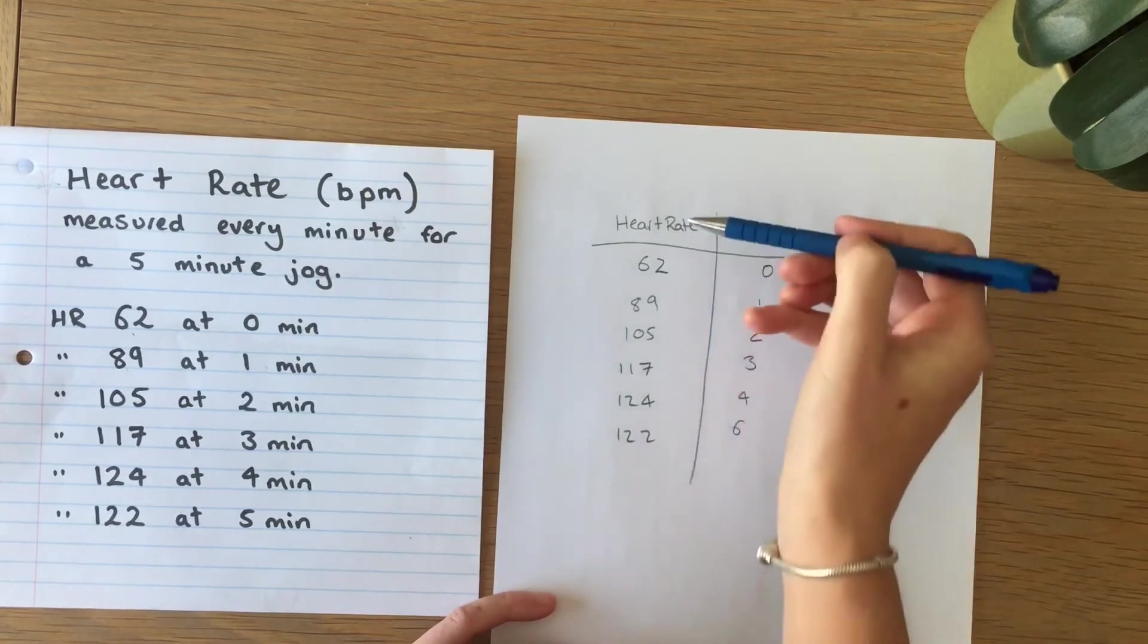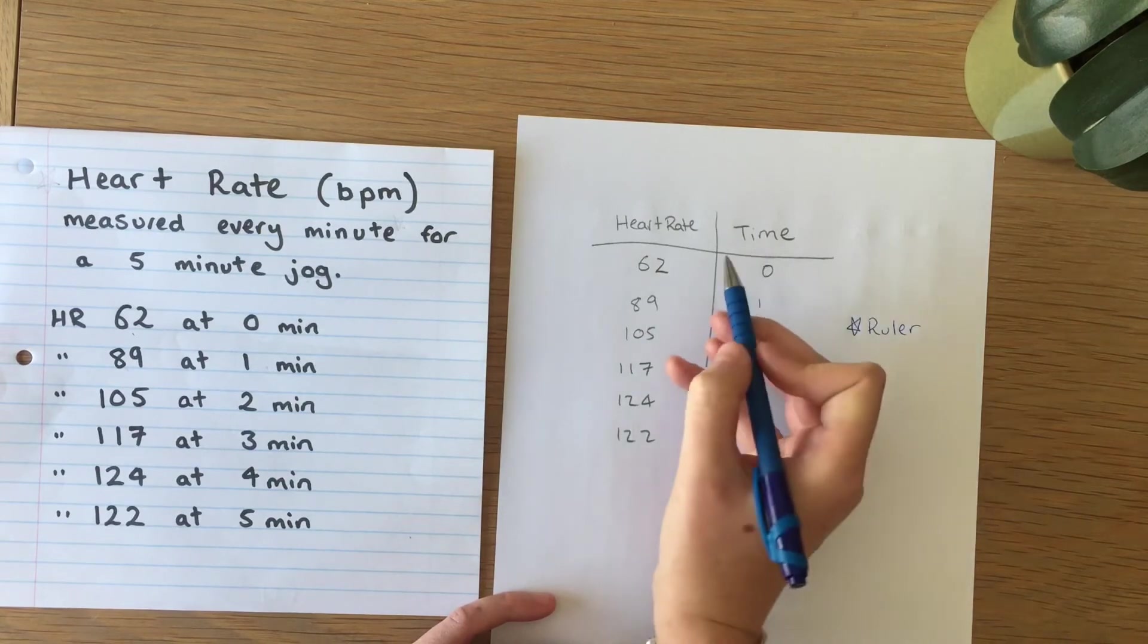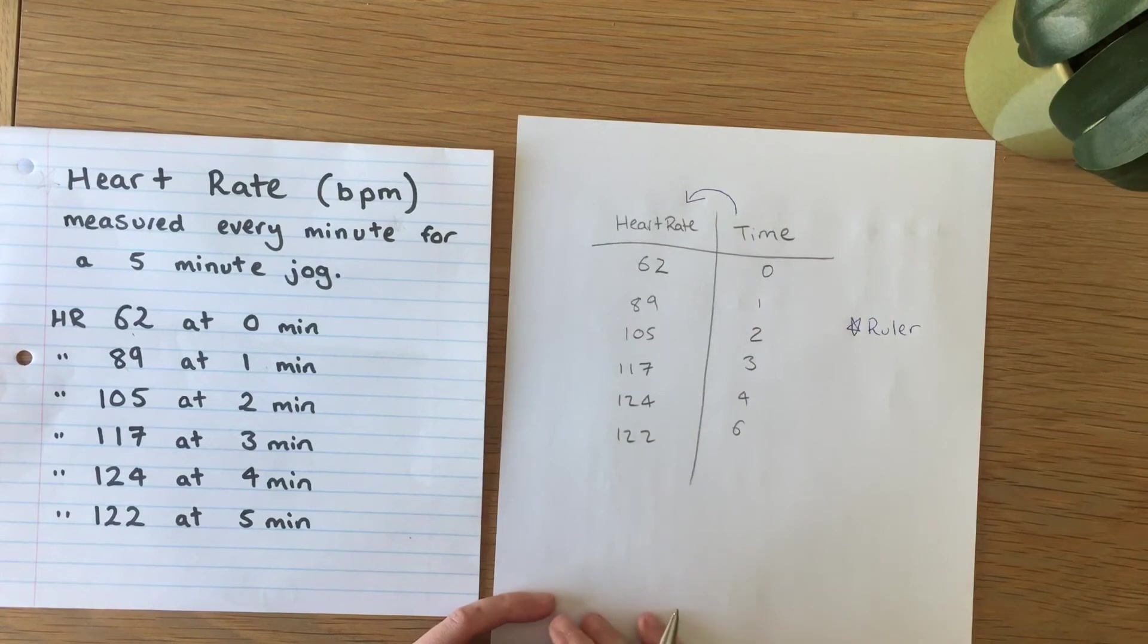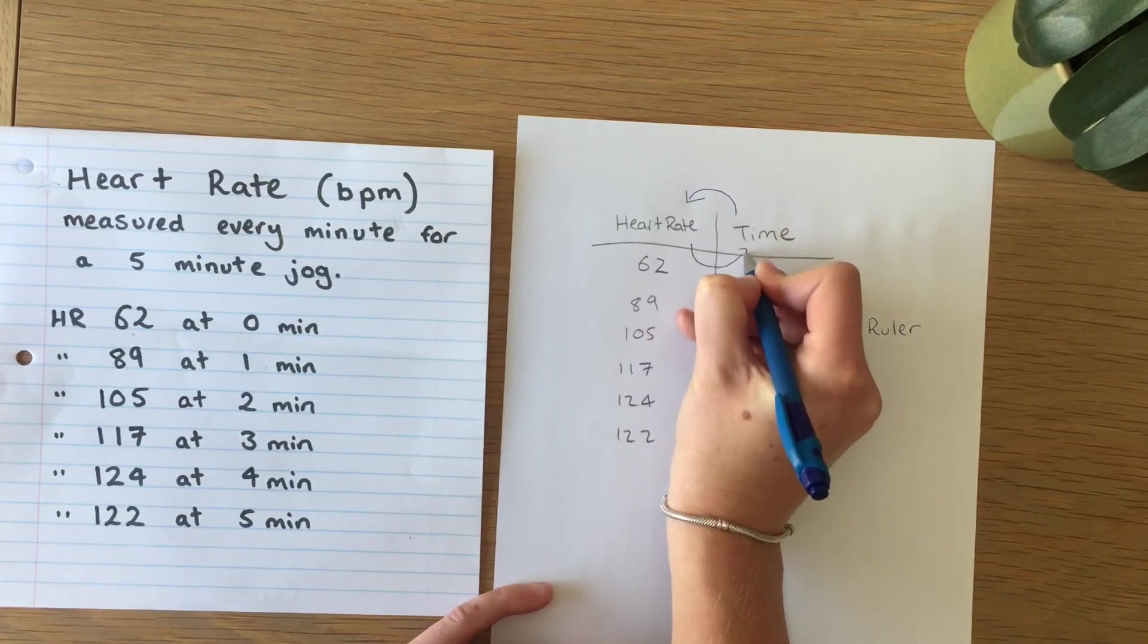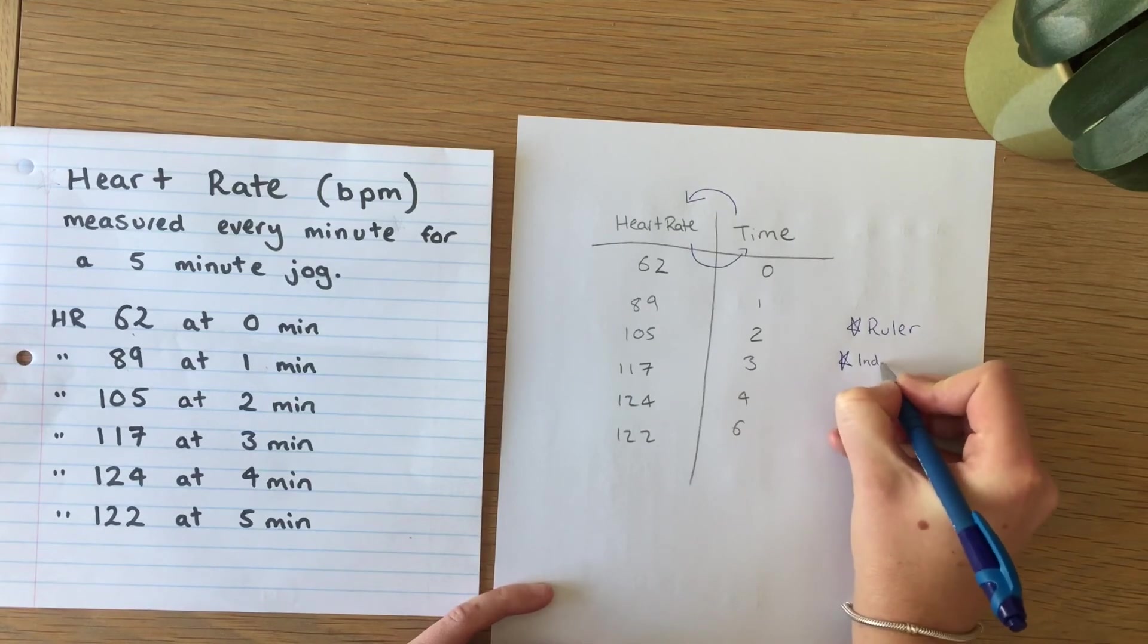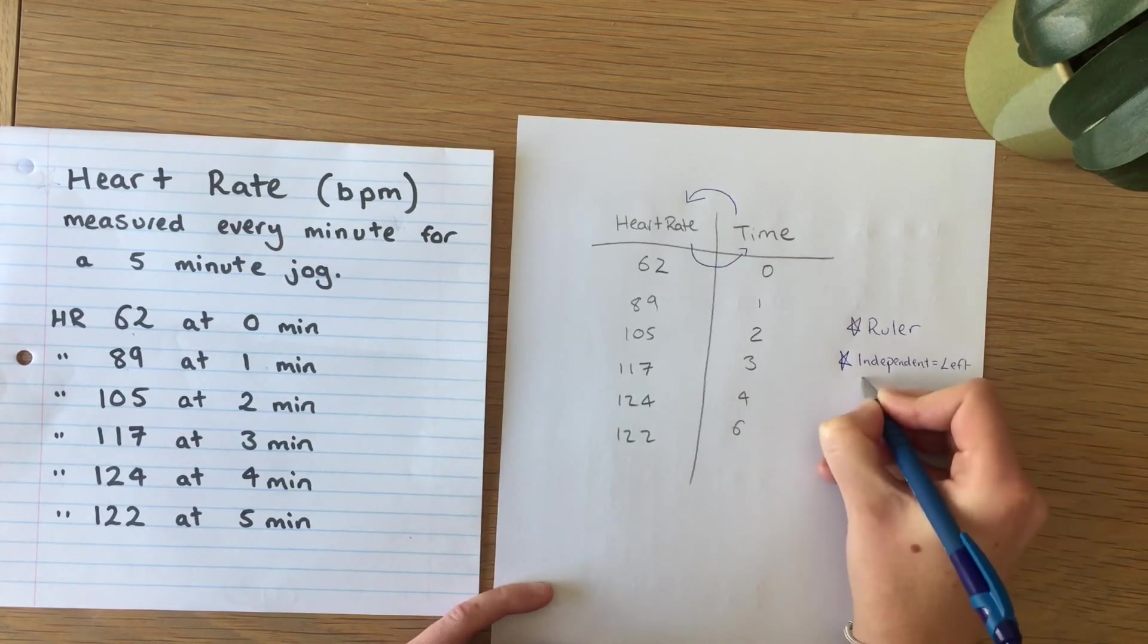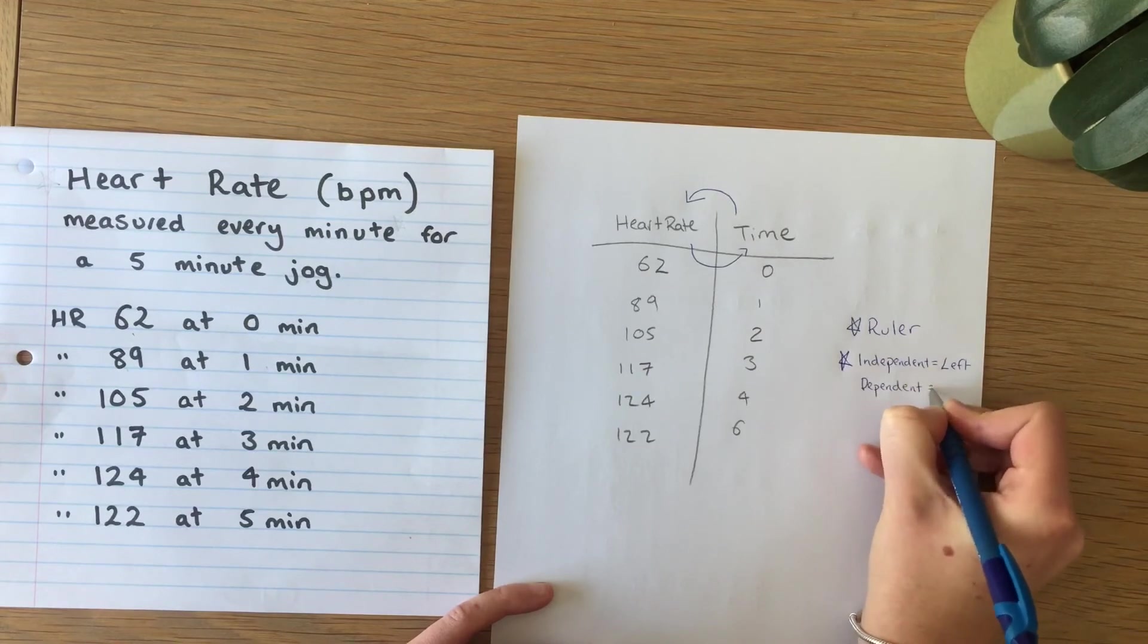Secondly we have ended up putting the dependent variable in the left column when in fact we need the independent variable which is time in the left hand column and then the dependent variable goes into the right hand column. So that's another important point to note. Independent equals left and dependent equals right.